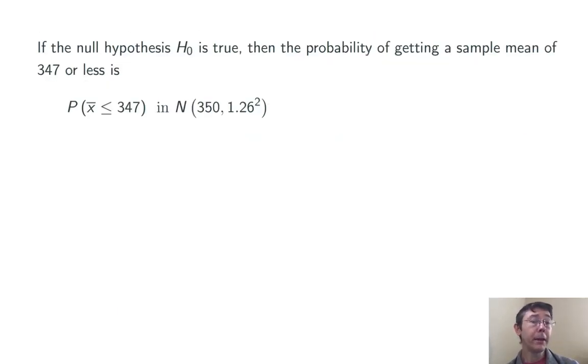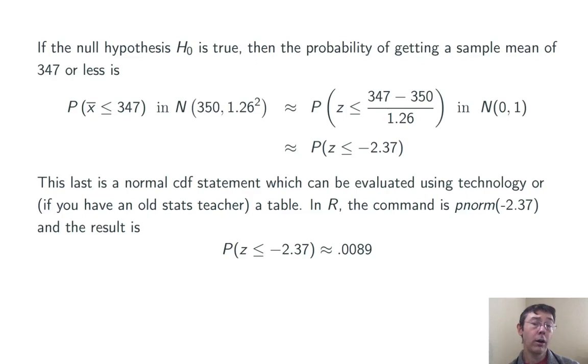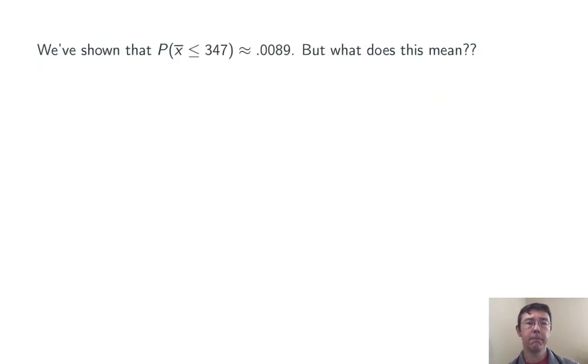Okay, so I'm going to do this by computing a Z score. I'm going to say the probability that X bar is less than or equal to that value is the probability that Z, just due to random chance, is less than or equal to the corresponding Z score. So, 347 minus 350 over 1.26. We're looking for the probability that Z is less than or equal to negative 2.37 in the standard normal distribution. In R, the command for that is pnorm of negative 2.37. Obviously, you can do that in a TI calculator or using a table if you have a very old school stats teacher. In this case, that probability is about 0.0089. So, a pretty small value.